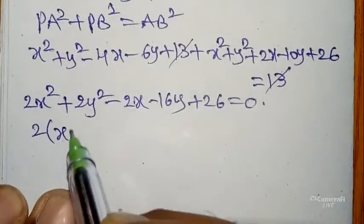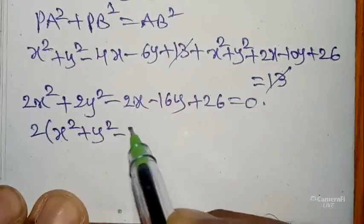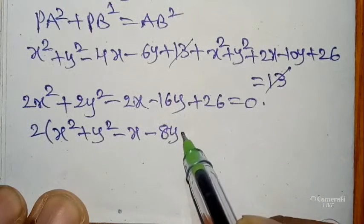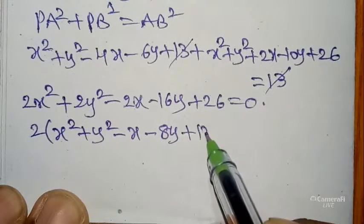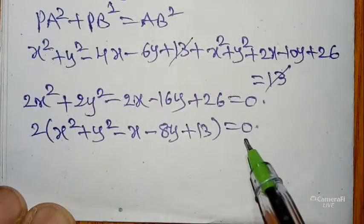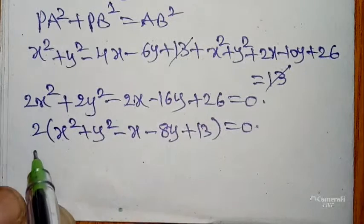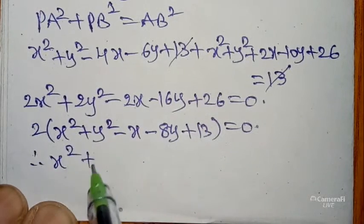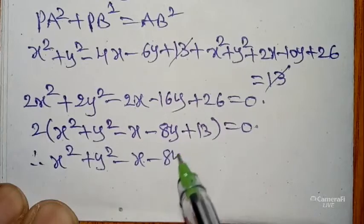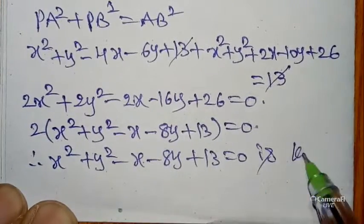Taking 2 as common factor and dividing: x² + y² − x − 8y + 13 = 0. This is the equation of the locus.